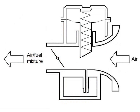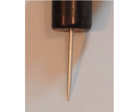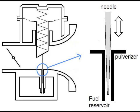At this point, only one question remains unanswered: how does the carburetor dose the quantity of fuel at each different aperture of the valve? This is simply due to a needle situated at the slide, which, as the slide opens, uncovers more and more the pulverizer situated at the venturi.